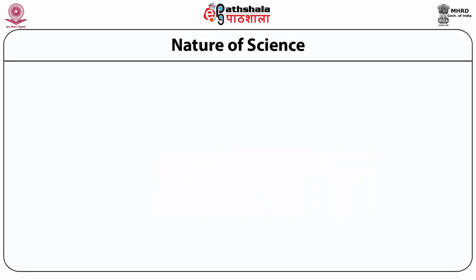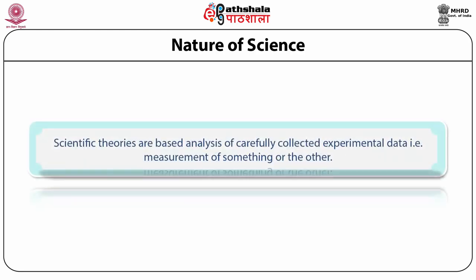This paper is about introducing biology to biophysics students. So we should understand, first of all, where does biology map under science — for that we should understand what is the nature of science. Scientific theories are based on analysis of carefully collected experimental data, which means measurement of something or the other. And this science essentially started during the renaissance period in Europe, around the 14th–15th century, because of three great people: Francis Bacon, René Descartes and Karl Popper. In recent times, we now understand what is the nature of science.